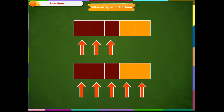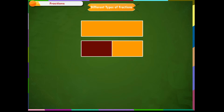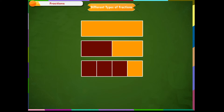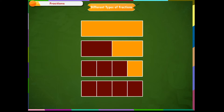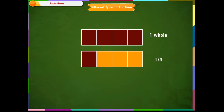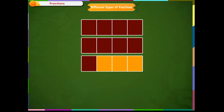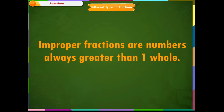It is easy to identify a proper fraction as we select a few parts out of many parts. But what about improper fractions? This is one whole. This is one half. This is three fourths. And this is four fourths. What about when you have one more one-fourth? Then you have five fourths. Three more one-fourths makes it nine fourths. Thus, we see that improper fractions are numbers always greater than one whole.